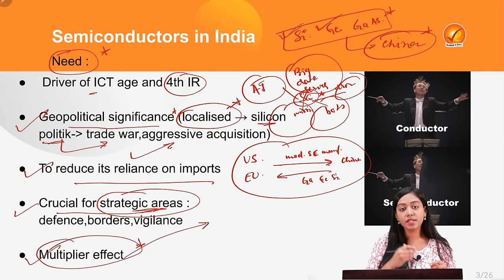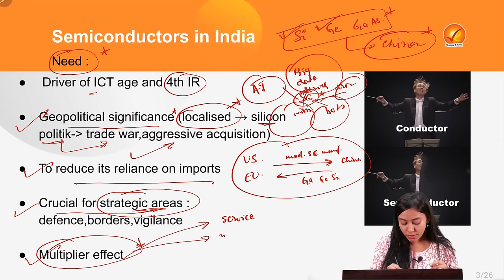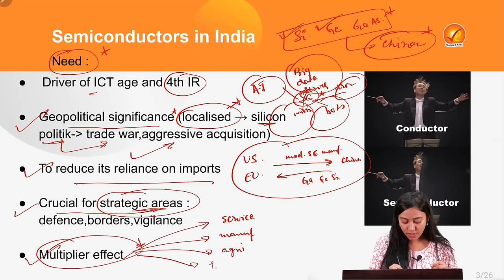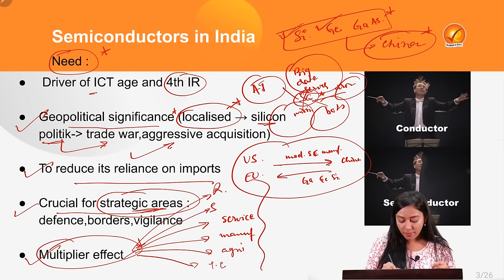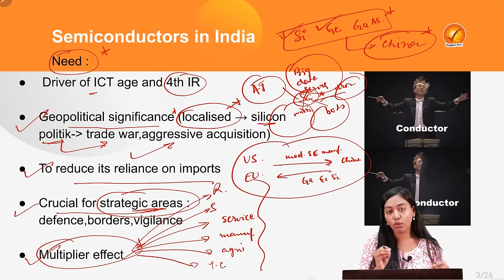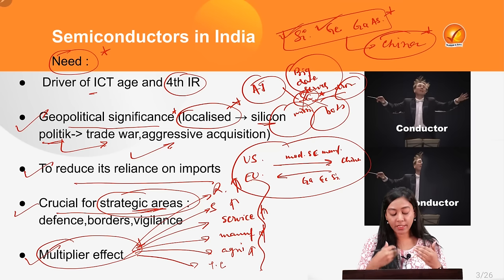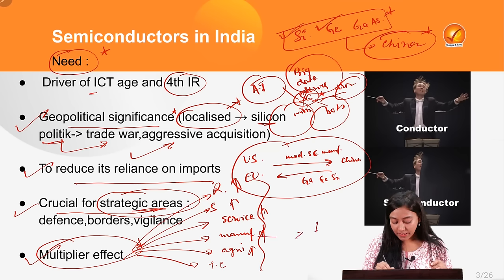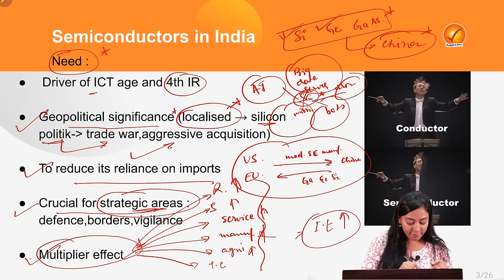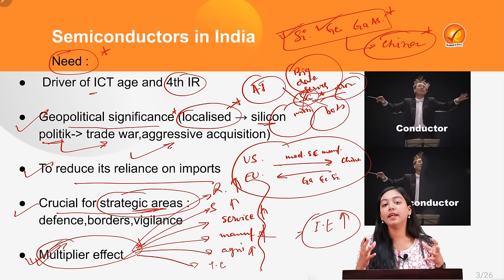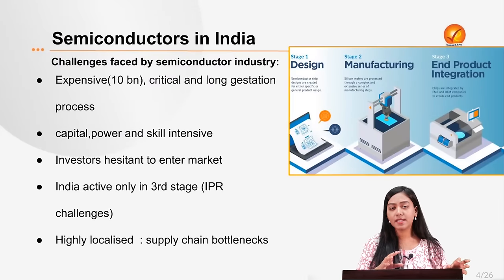Semiconductors also have a great multiplier effect on the economy. They drive computers, mobile phones, and gadgets, contributing heavily to the services sector. They also contribute to manufacturing, agriculture, telecommunications, satellite, and renewable energy sectors — all of which have semiconductors at their core. When India has sufficient semiconductors, these core industries will grow, and therefore investing in semiconductors will have a huge multiplier effect on the Indian economy.